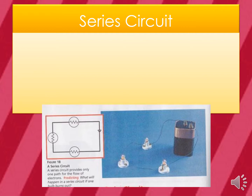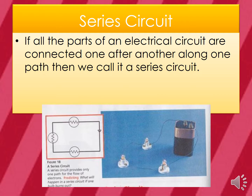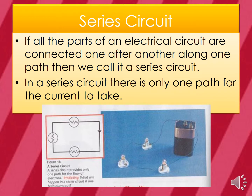In a series circuit, all parts of the electrical circuit are connected one after another along one path. You'll see in the diagram that one end of the battery is connected to one side of a bulb, and the other side of that bulb is connected to one side of the next bulb. In a series circuit, there's only one path for the current to take, meaning if one bulb goes out, all of the bulbs will go out. This used to be how Christmas tree lights were wired, and it was a big deal trying to figure out which bulb went out because none of them would light up.